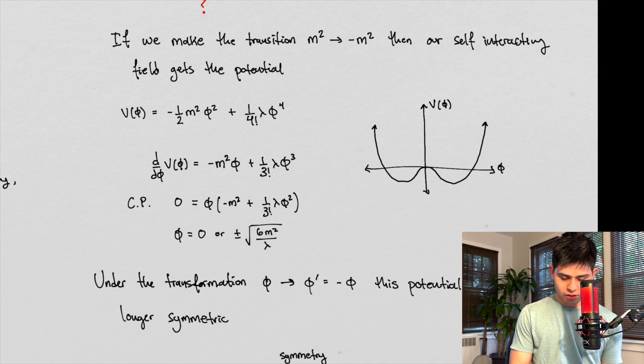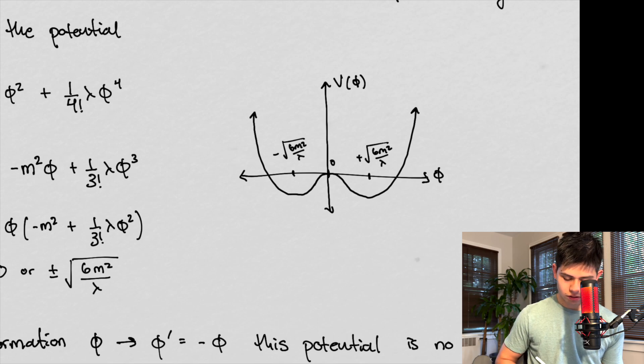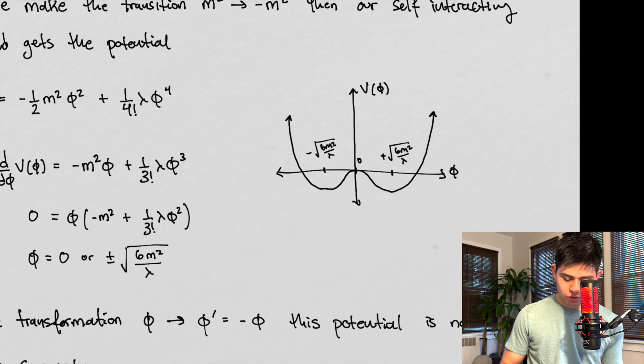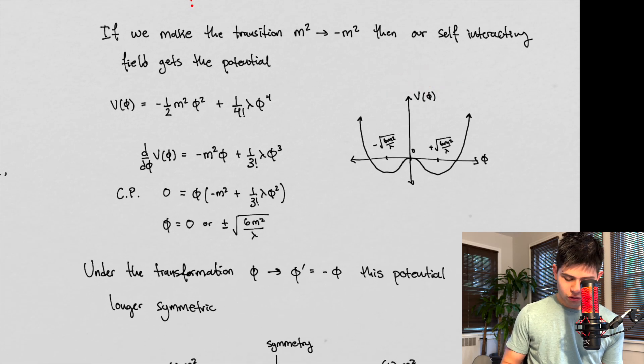But this means that phi can be zero or two other values, right? And that sort of corresponds, when we graph this function, here's our zero, right here. Here is our plus 6m squared over our interaction constant. And here is our minus 6m squared interaction constant.